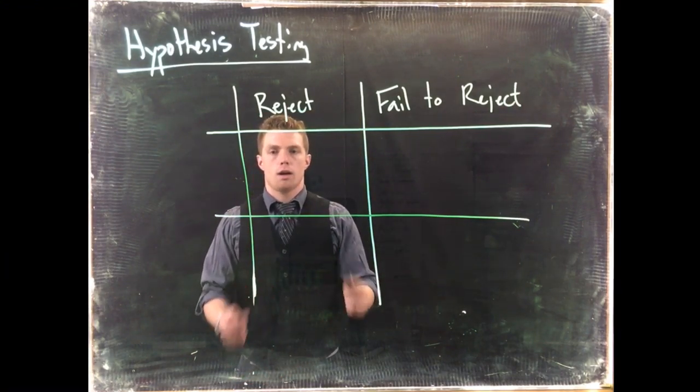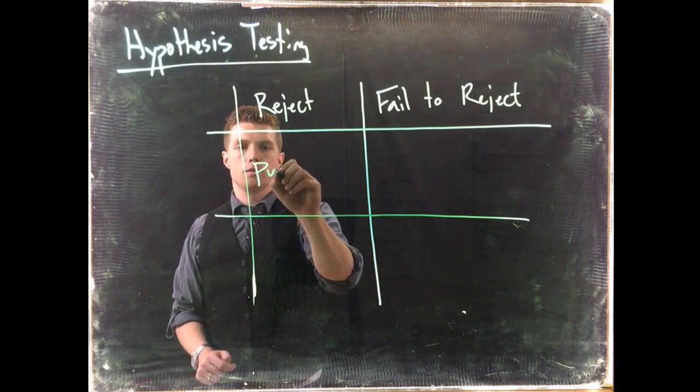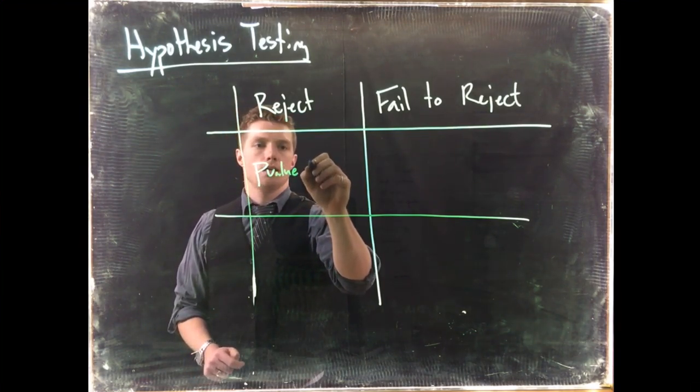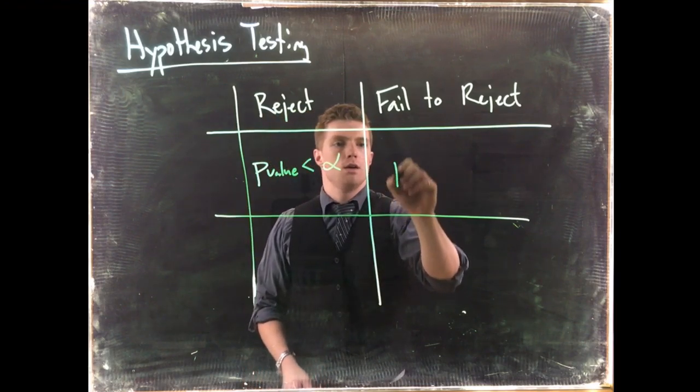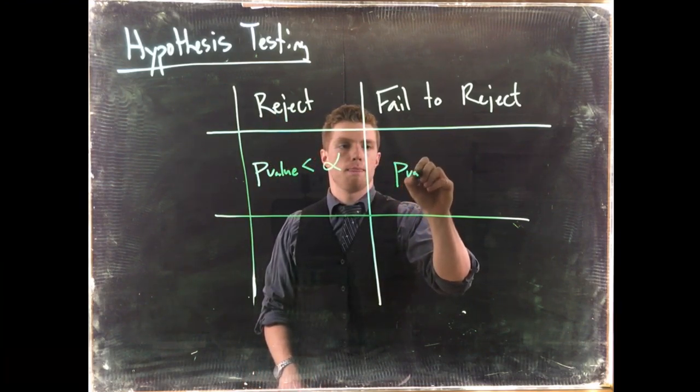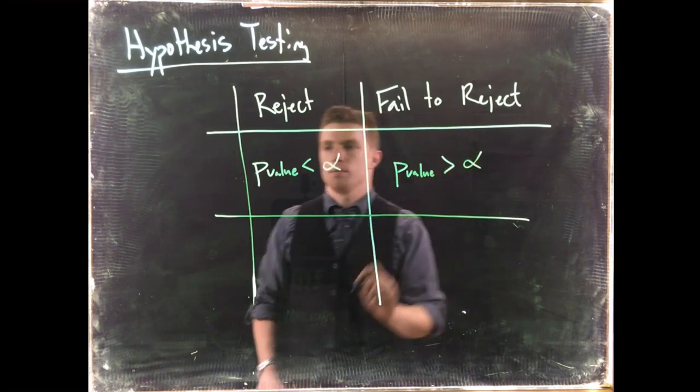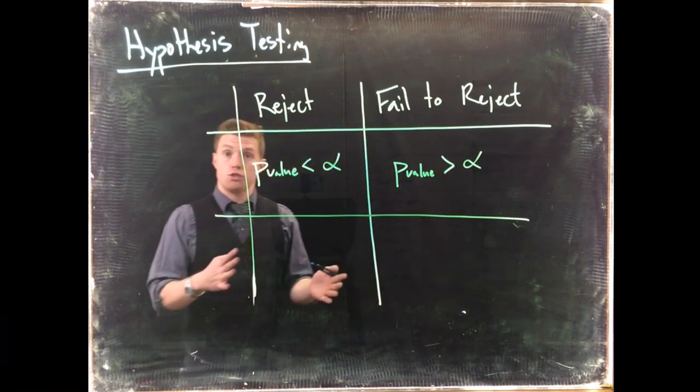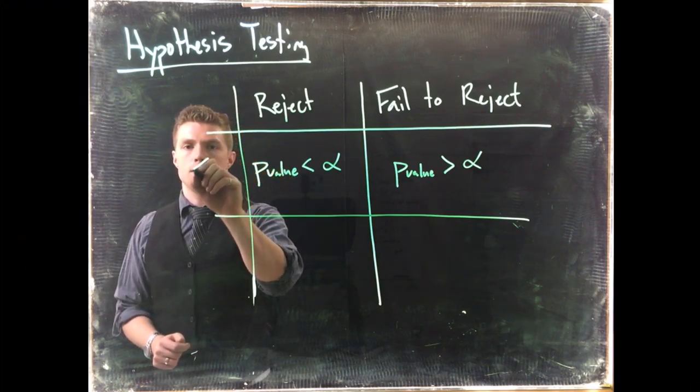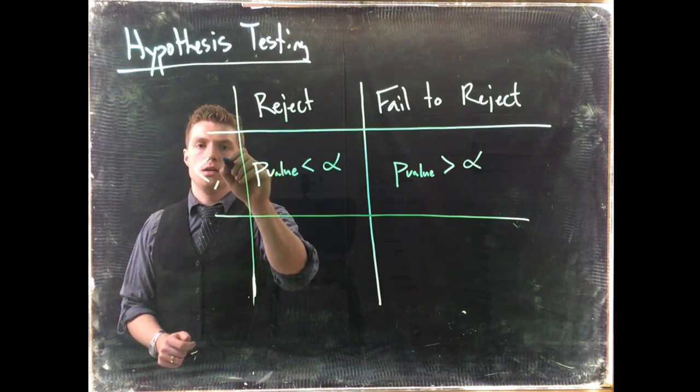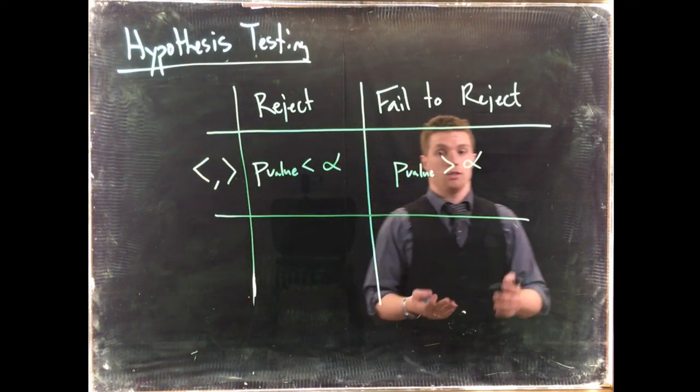We reject when our p-value is less than alpha, and we fail to reject when our p-value is actually greater than alpha. Now this is a true statement when we are talking about greater than or less than, when our alternative hypothesis is greater than or less than.